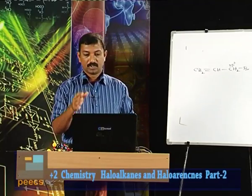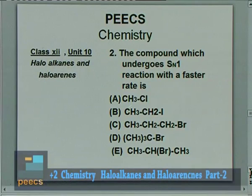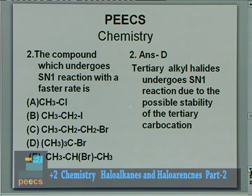Question 2: The compound which undergoes SN1 reaction with the fastest rate is — options are methyl chloride, ethyl iodide, propyl bromide, tertiary butyl bromide, and 2-bromopropane. The correct answer is D — tertiary butyl bromide, because tertiary alkyl halides undergo SN1 reaction with the fastest rate.